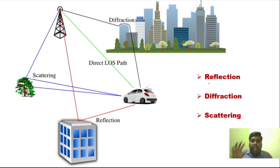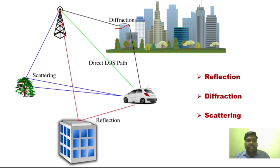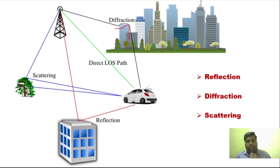And what is diffraction? Electromagnetic waves have the property of diffracting. Whenever there are any sharp objects between the transmitter and receiver, diffraction will take place. That is, electromagnetic waves have the property of bending around corners, bending over obstacles. That is called diffraction. And what is scattering? Electromagnetic waves will scatter whenever the dimension of the object is small compared to the wavelength of that particular wave.